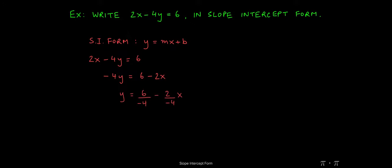This will give us 6 over negative 4, minus 2 over negative 4 times x. We essentially divided each term of this equation by negative 4.